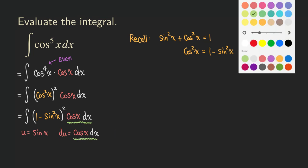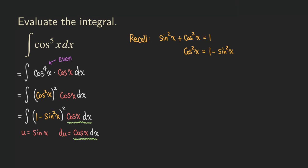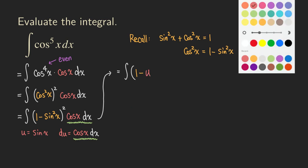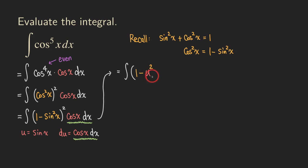Let's continue with the problem. We are going to get the integral of 1 minus — now, making the substitution with sine x replaced by u — we have 1 minus u squared, all squared. Don't forget there is still the square from the sine squared, but we let u be sine, so we still have the square. And then this cosine x dx gets replaced by du.